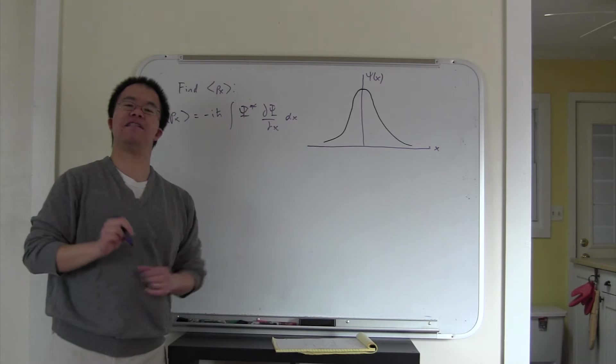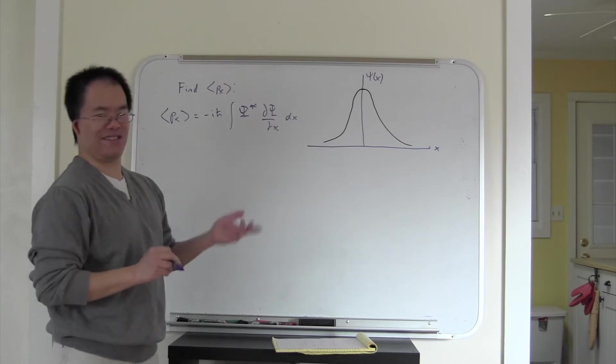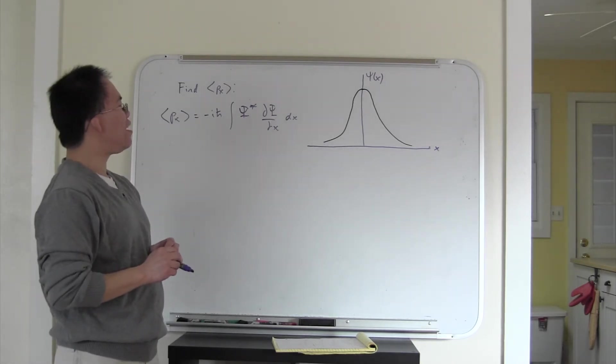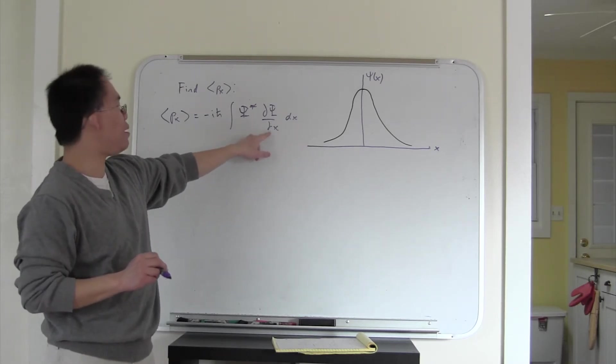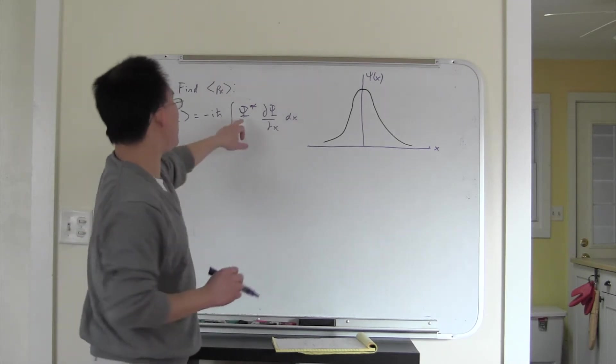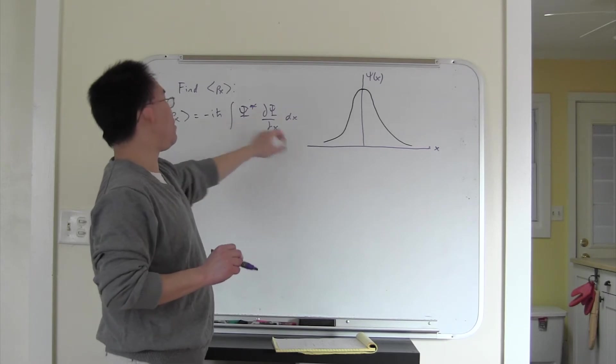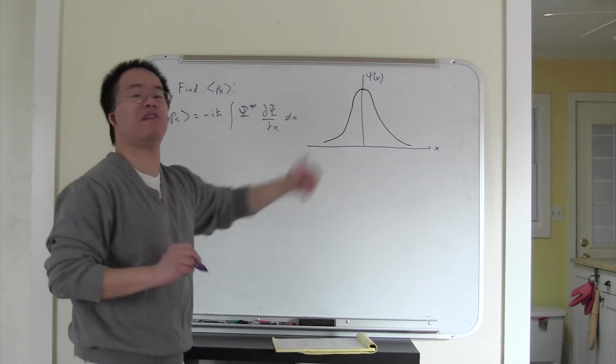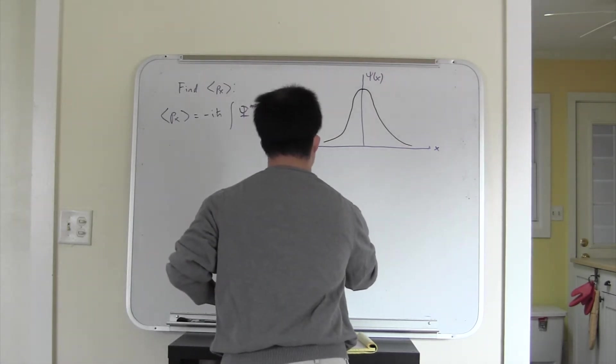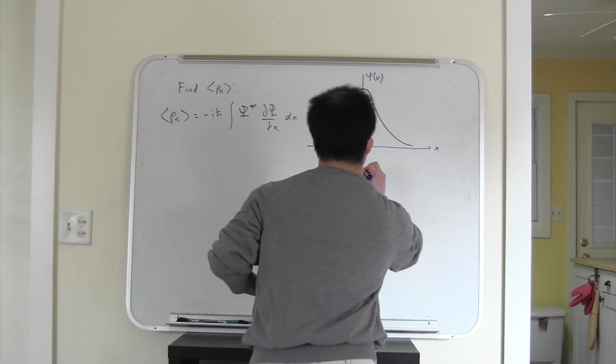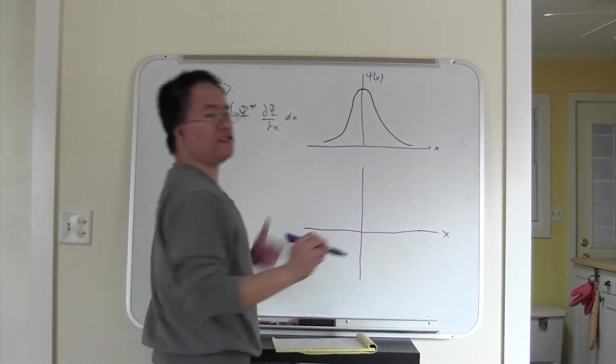And in the question, I hinted that you might want to think about this graphically. And such is, in fact, the case. And so what we might try to do is to graph our derivative of the wave function. Now, since our wave function, we're told, is pure real, you should remember that psi-star is just going to be the same as psi. So let me try to sketch that derivative.